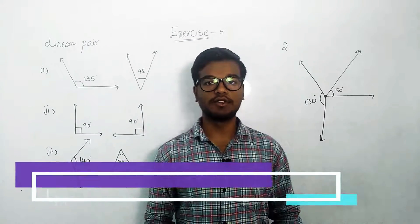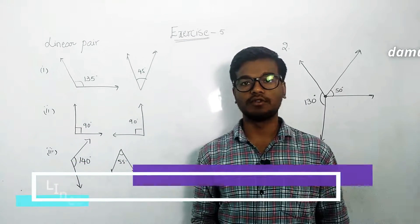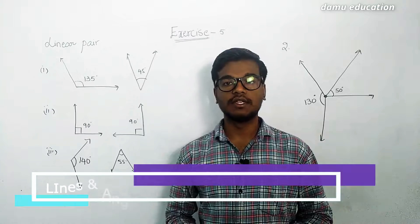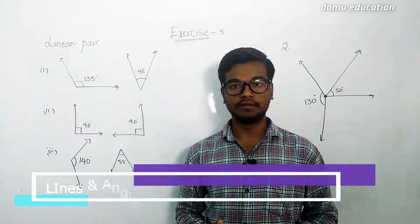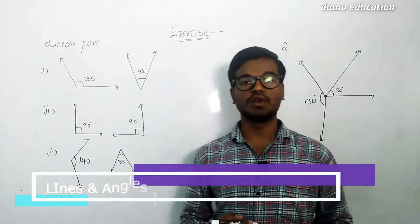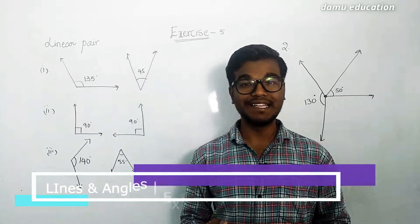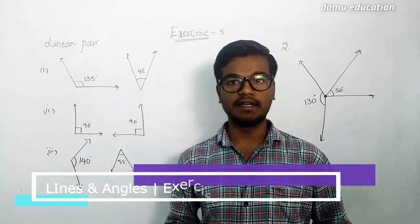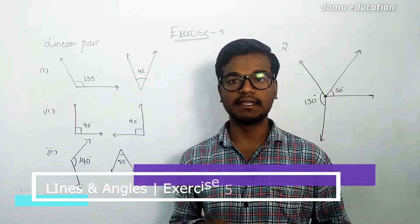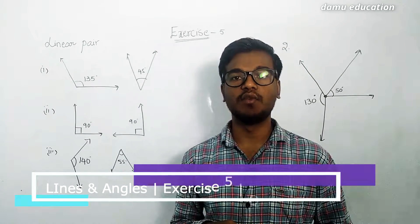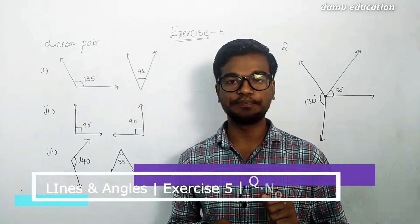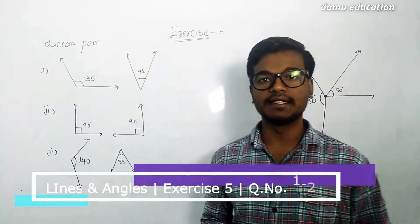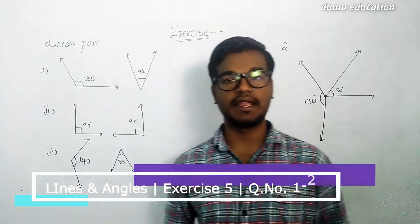In this module we are going to discuss the solutions for exercise 5. We need to discuss what linear pair angles are. Linear pair angles means the sum of two adjacent angles will be equal to 180 degrees — then we can call those two angles a linear pair.